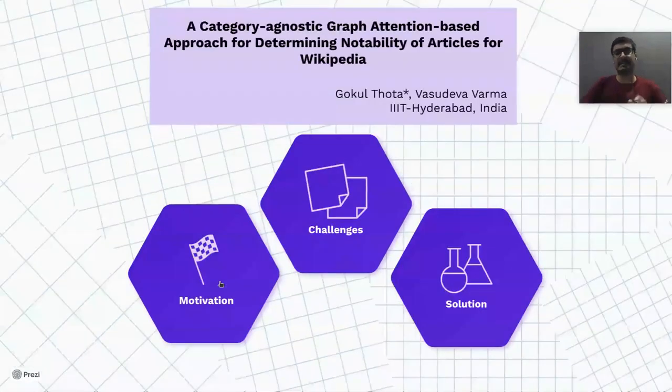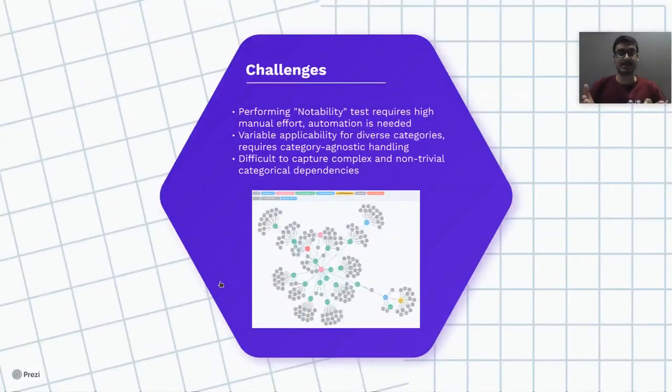Let's look at the challenges in trying to estimate this notability for Wikipedia articles. Performing this notability test requires high manual effort and hence it's not scalable. Further, this notability test applies differently for different categories and hence requires a generalizable category agnostic handling method. Further, it is difficult to capture complex and non-trivial categorical dependencies.